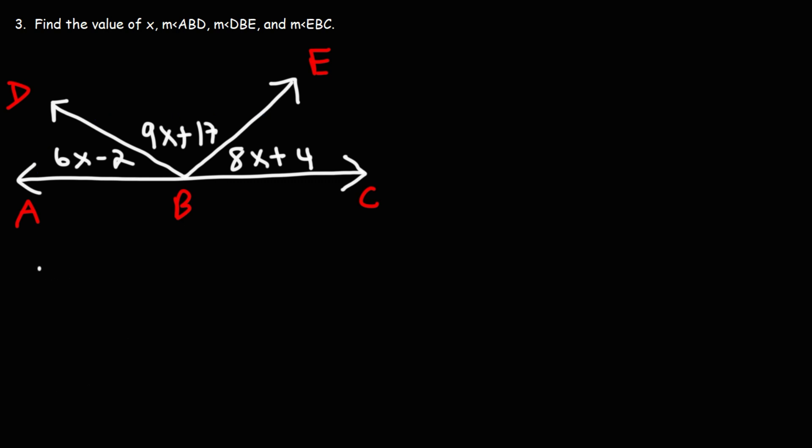So we can write an equation: 6X minus 2 plus 9X plus 17 plus 8X plus 4. That's going to be 180. Now, just like before, we need to do some algebra to get the value of X. So we're going to focus on combining like terms.